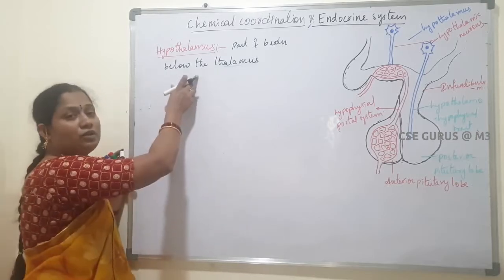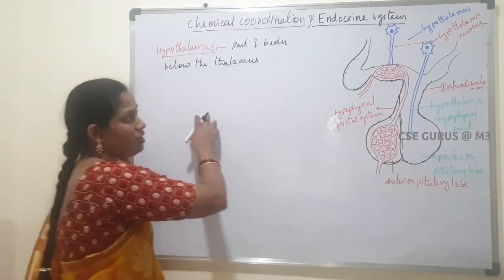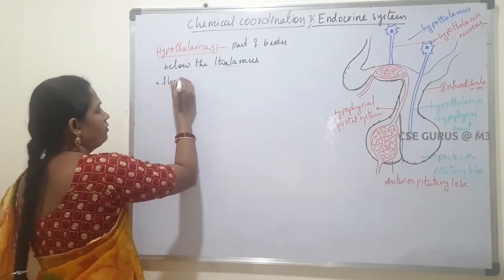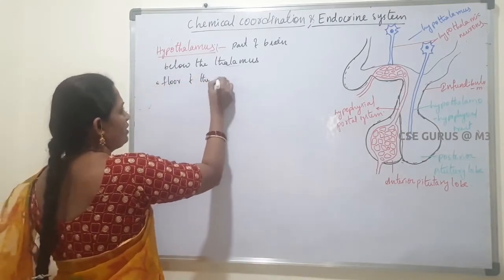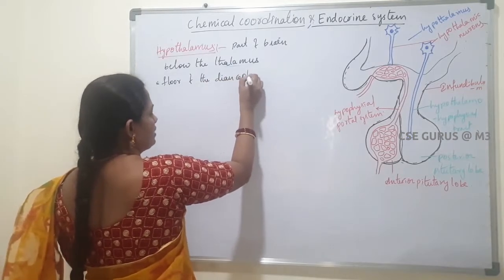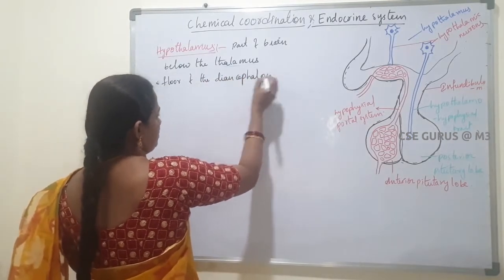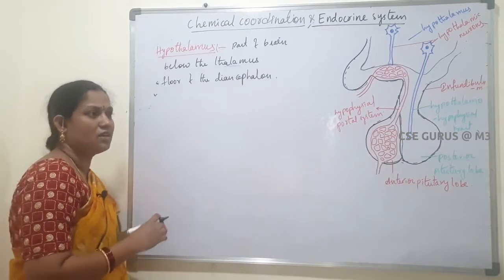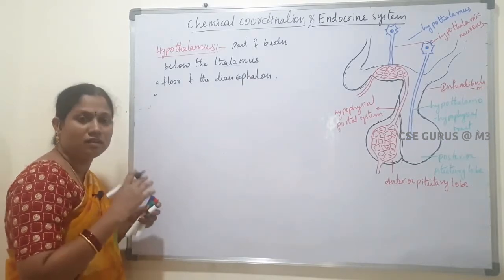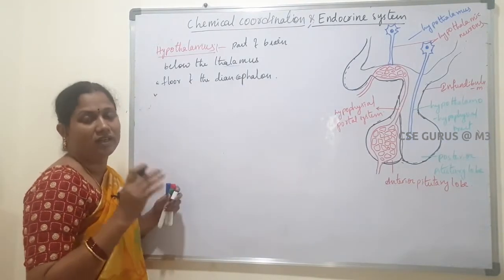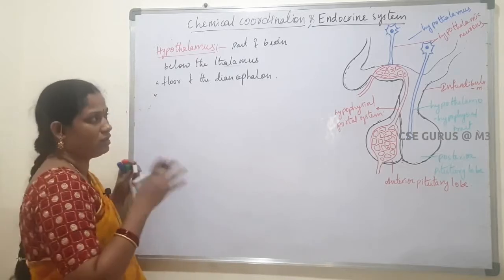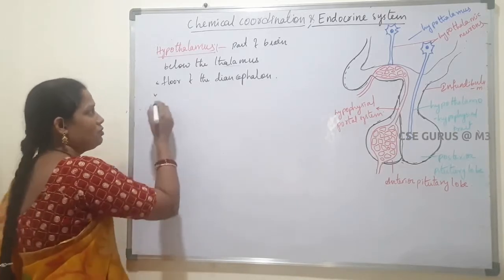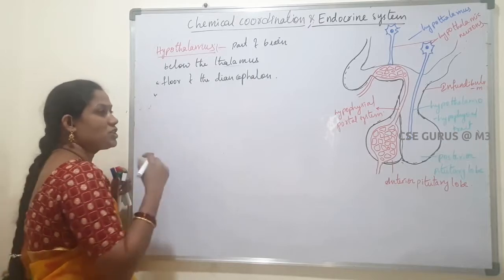The floor of the diencephalon is called hypothalamus. Hypothalamus performs various functions and controls various processes. In the hypothalamus, some special cells are present.